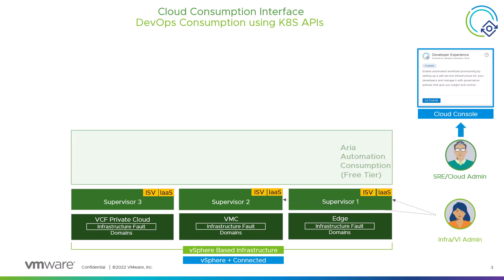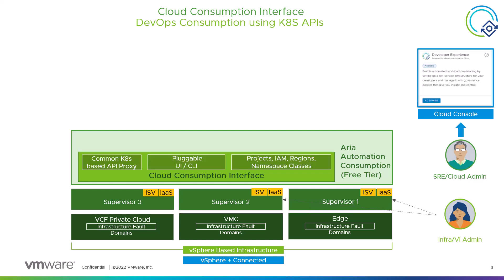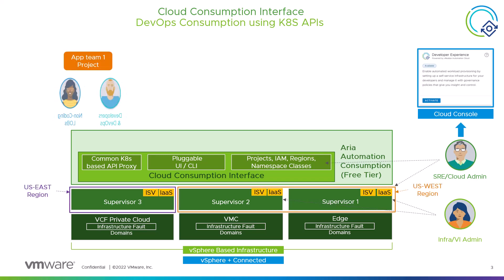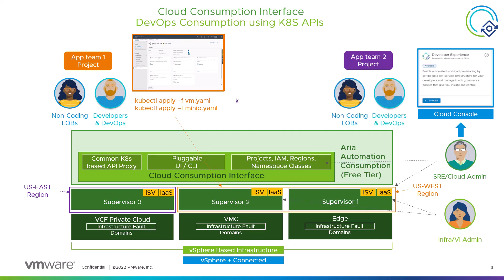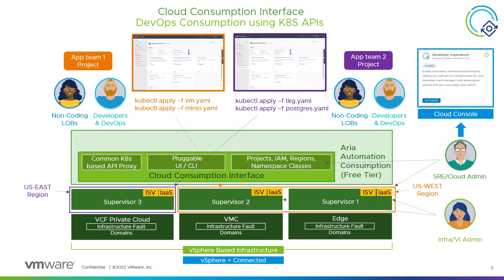This will activate VMware ARIA automation free tier and set up all the necessary building blocks needed to configure, manage, and use the cloud consumption interface capability. Users can then utilize kubectl commands to provision and manage Kubernetes-based supervisor services with object.yaml definitions that exist today with vSphere with Tanzu, and accessible via a single sign-on from a common cloud endpoint that allows developers to manipulate applications in many different regions with many supervisors as easily as managing and consuming a single supervisor today.